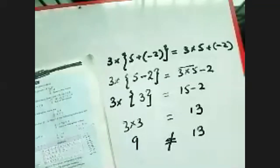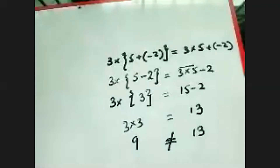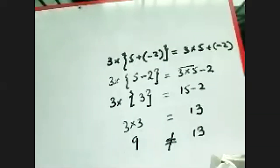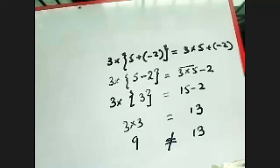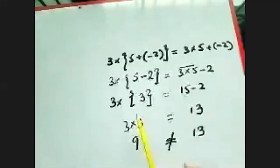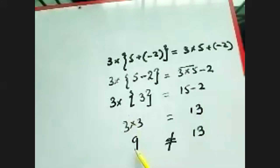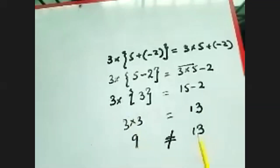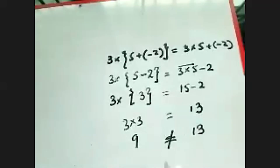I solved this statement so you understand why we say it is false. Write down 'false' against the 8th statement. The left hand side gives you 9 and the right hand side gives you 13 — both sides are not equal, so the statement is false.